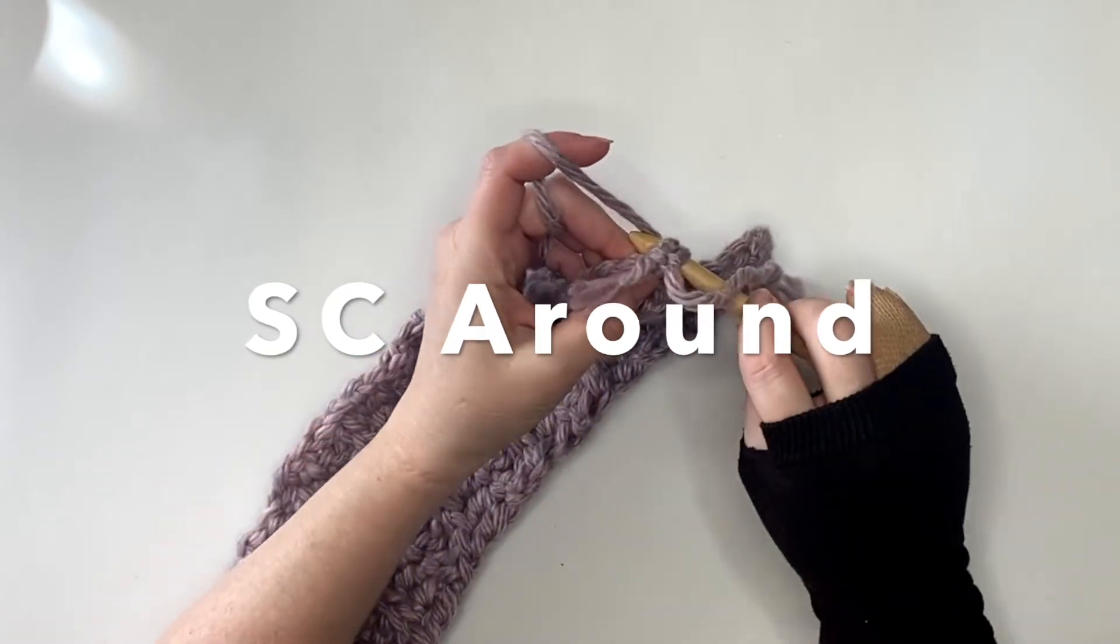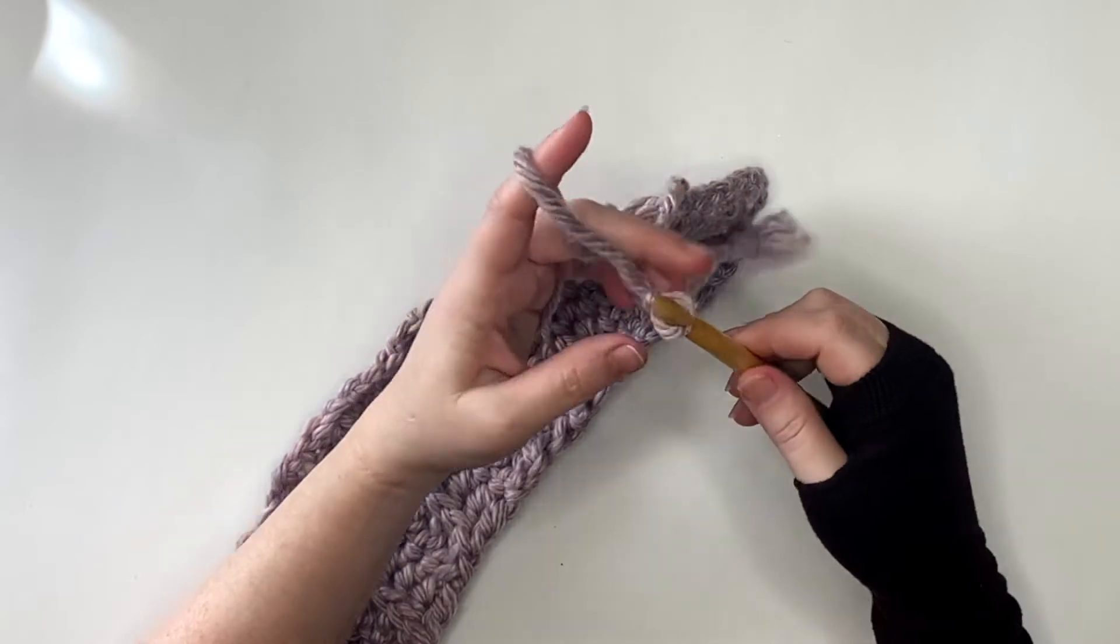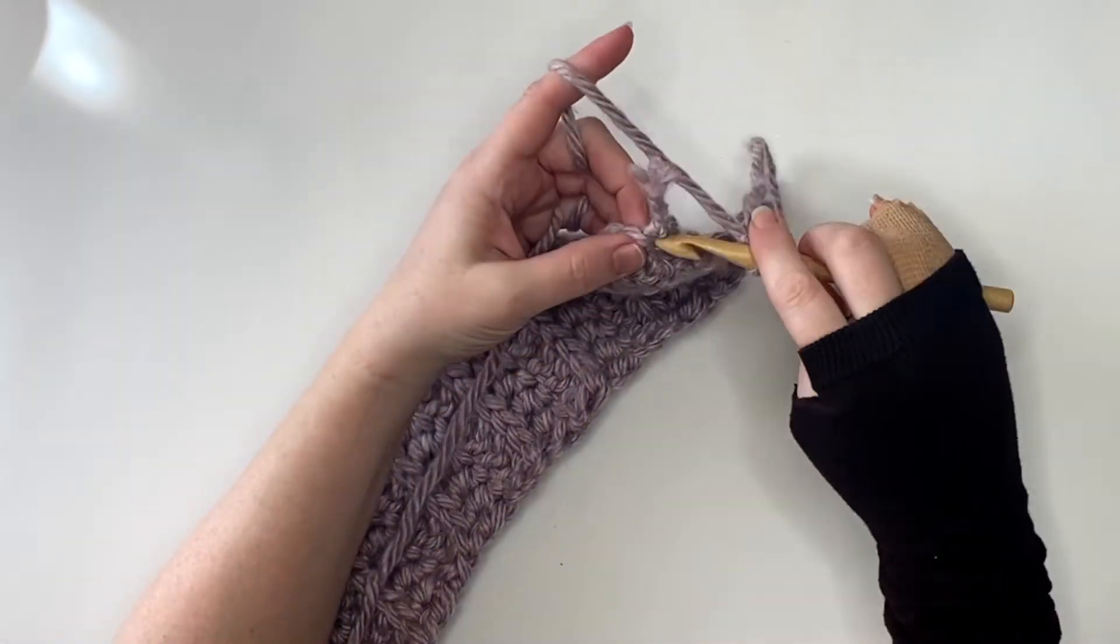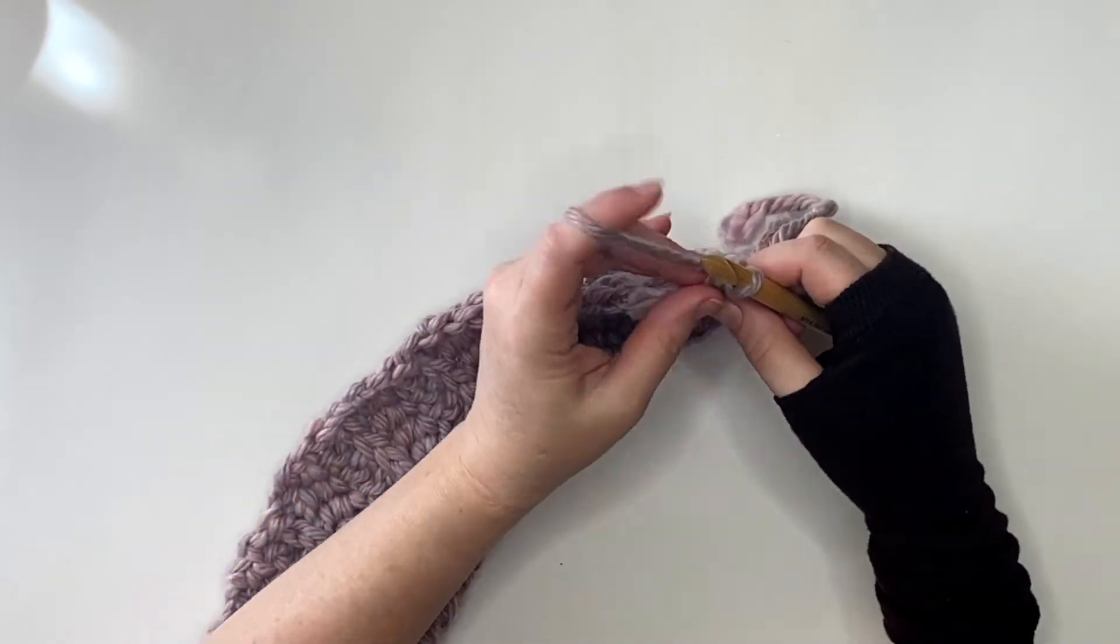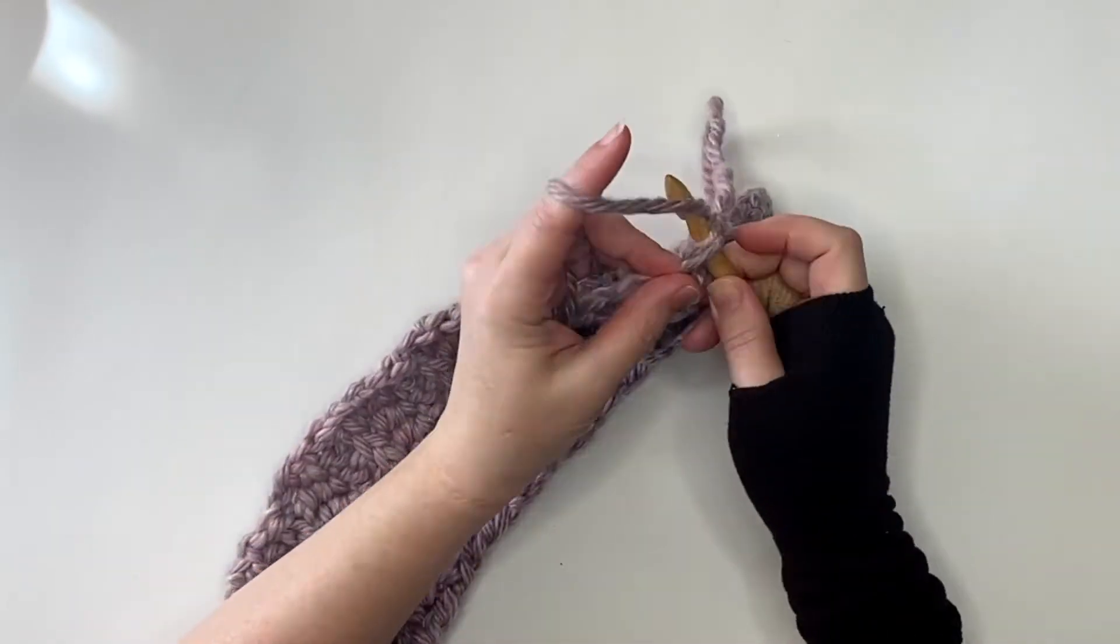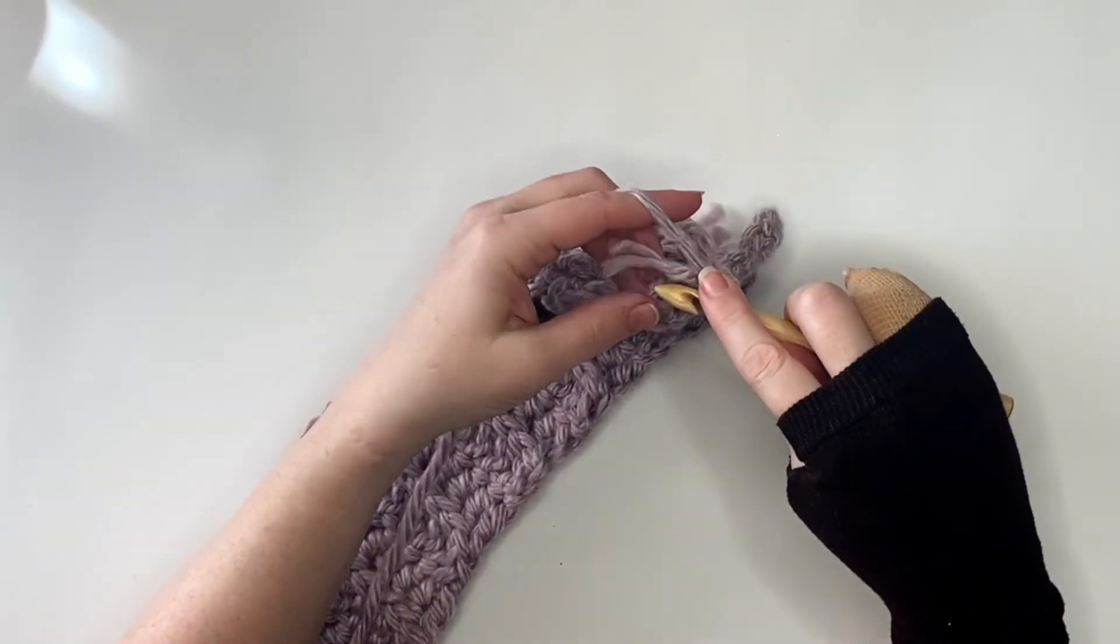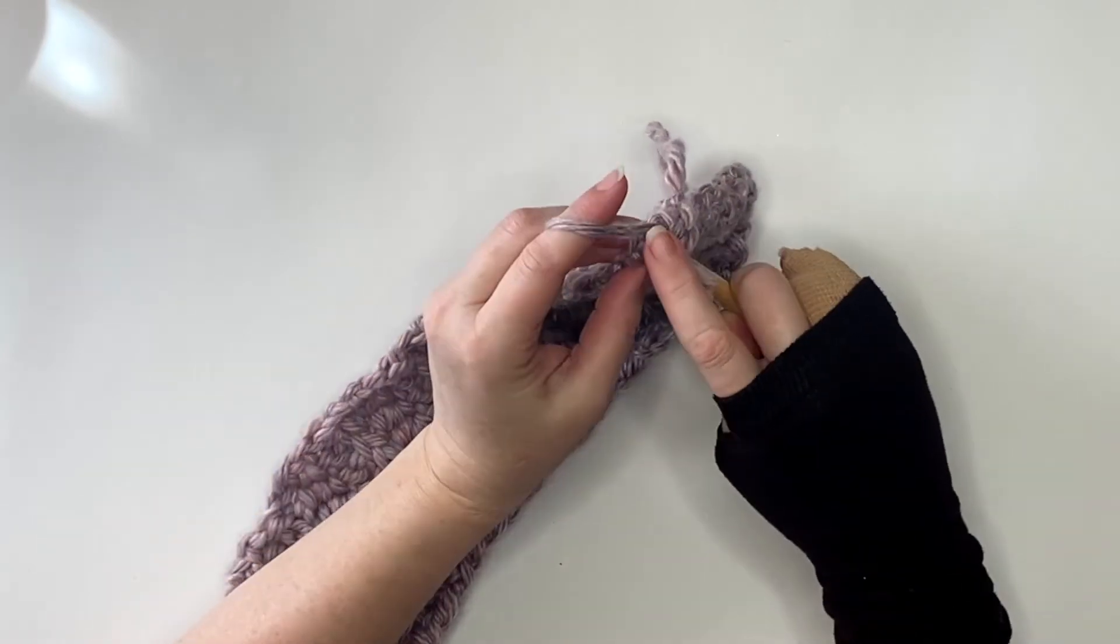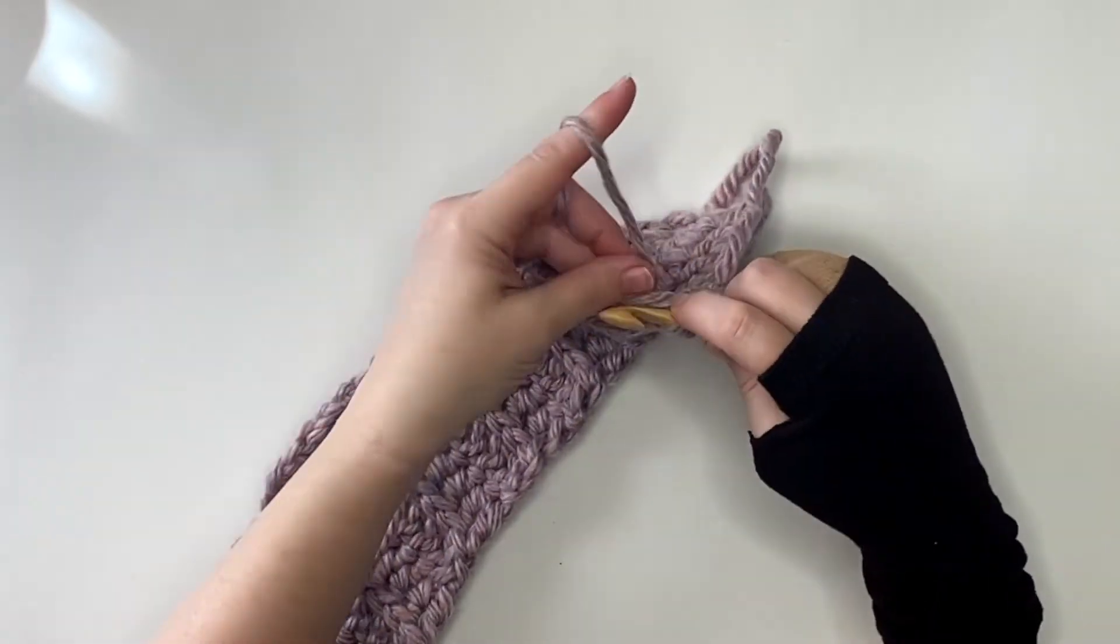Once you have those 49 rows done, you're just going to single crochet all the way around your entire scarf. Just start at any corner—it doesn't really matter. You want to do three single crochets in each corner to make that nice and clean and not buckle on you. But other than that, you are done. Once you get done with the single crochets, you can just fasten off and weave in ends, and your scarf is ready to go.